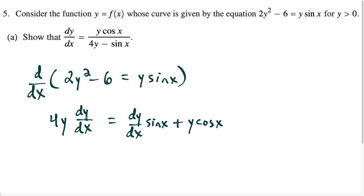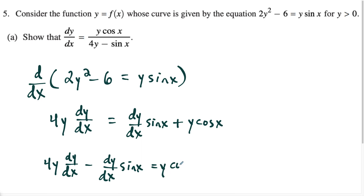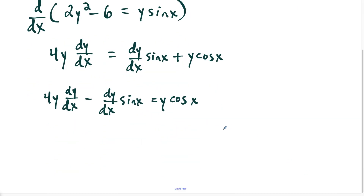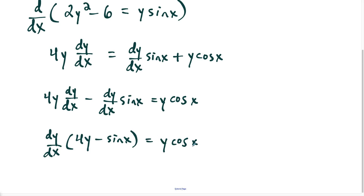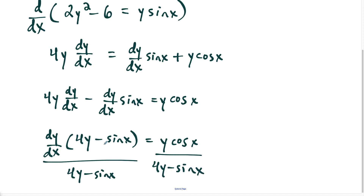From here, we have to get all the dy/dx terms on one side. So we have four y dy/dx, and we subtract dy/dx sine x from both sides, giving us minus dy/dx sine x, and this equals y cosine x. Then we factor out dy/dx, and we're left with four y minus sine x, which equals y cosine x. The last step is to divide both sides by four y minus sine x, so these factors cancel out.